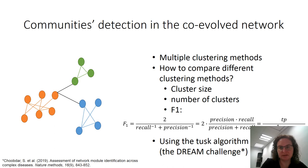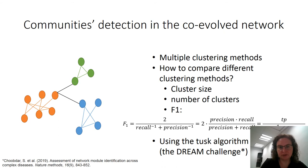The next stage was community detection. We used multiple clustering methods and compared them by cluster size, number of clusters, and F1 score — which incorporates both recall and precision — to assess how well they recapitulate known pathways. Finally, we decided on the TASK algorithm from the DREAM challenge as the best clustering method. We now have clusters which we assume can correspond to biological pathways.